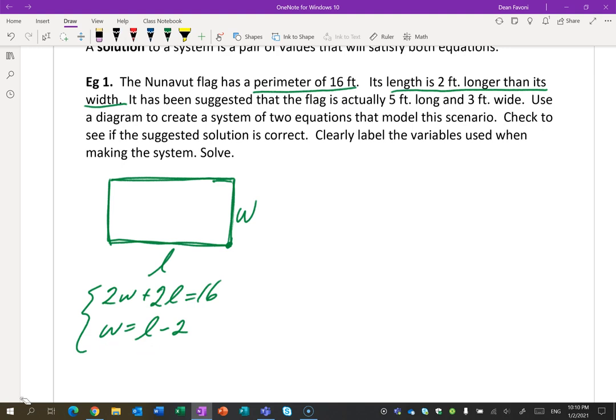I'm going to say W equals L minus 2. So I'm totally making this up, but let's say that the length was 10, and then the width would be 8. You're right, you would have to subtract 2 from the length to get the width. So now we have to solve it. And it's your choice here how to solve it. You can use substitution, you can use add-subtract. Line 1, line 2.